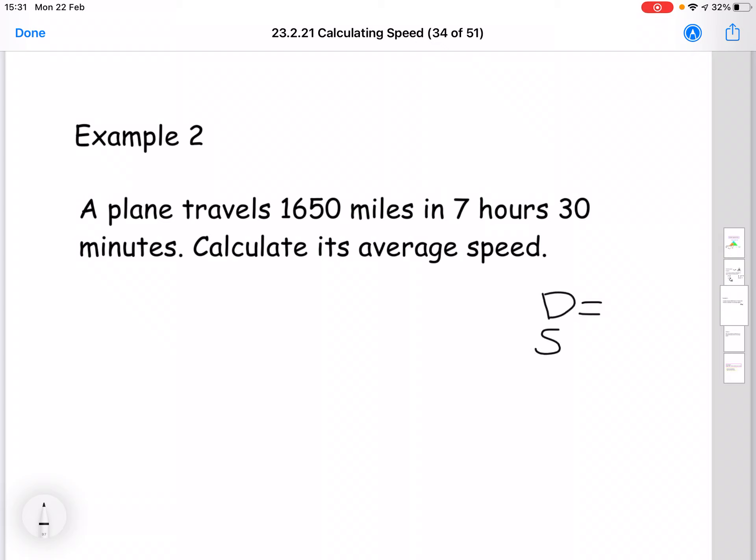So distance, speed and time. Our distance is 1650 miles. Our speed, we're trying to calculate, so we'll leave that as a question mark. Now our time is seven hours, 30 minutes. Remember I talked about yesterday that you need to use decimal time. So seven hours, 30 minutes would be 7.5 hours.